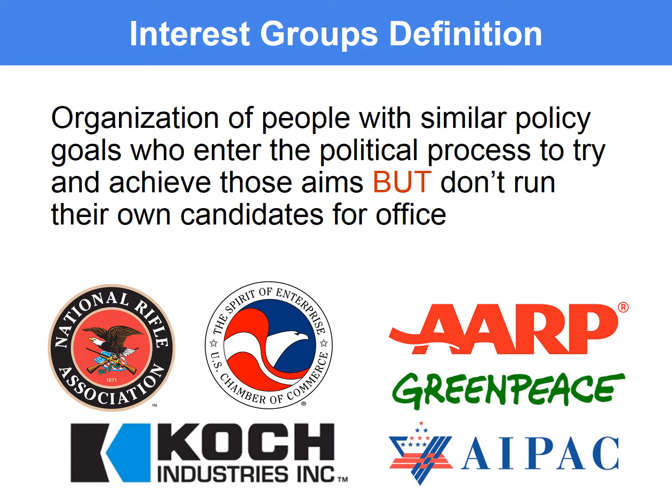Now, what is an interest group? By definition, an interest group is an organization of people with similar policy goals who enter the political process to try and achieve those goals, but they don't ever run their own candidates for political office. So essentially, they have the same goals and aims as a political party — they want to have an influence on policy and the political process, but they never actually run candidates for office. Some examples include the National Rifle Association, or the NRA, which are among the biggest spenders in terms of interest groups.